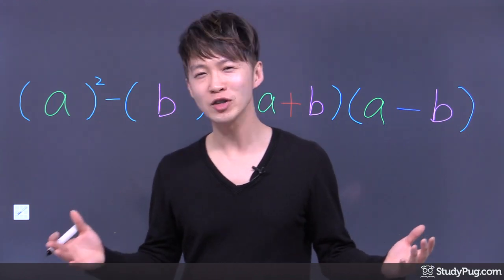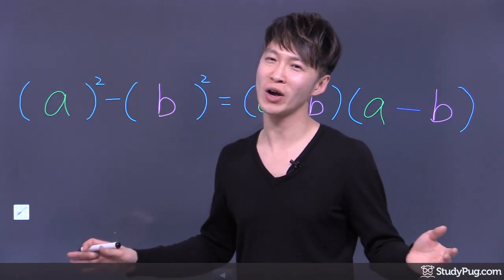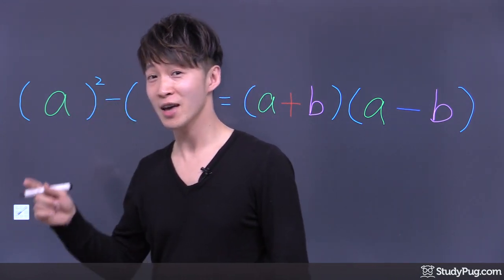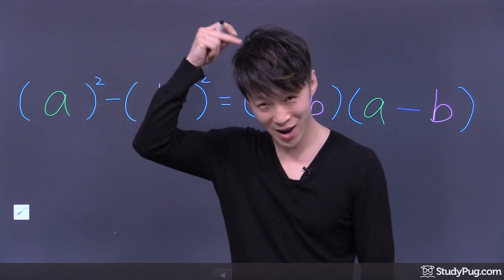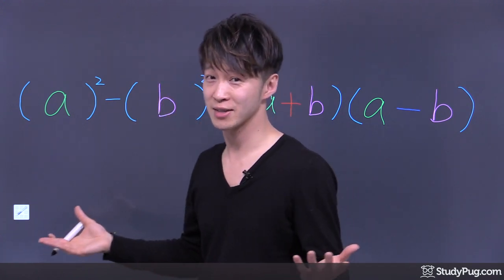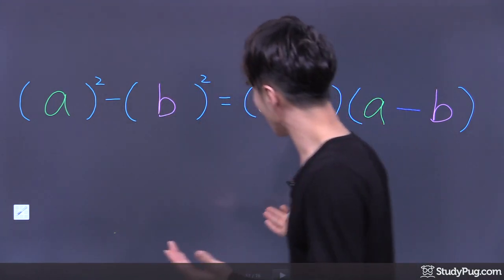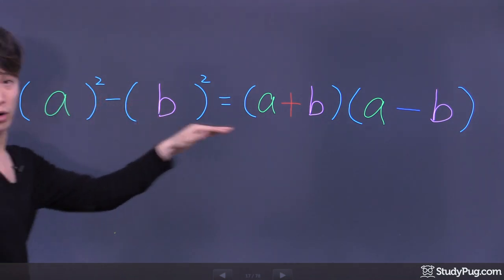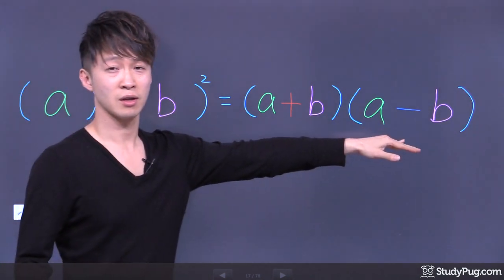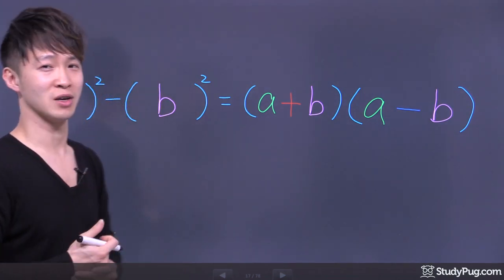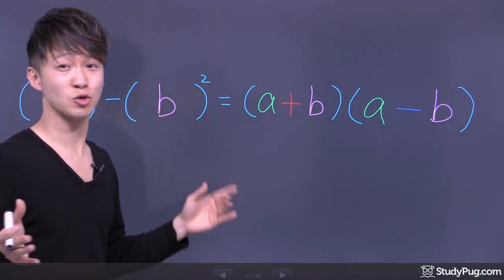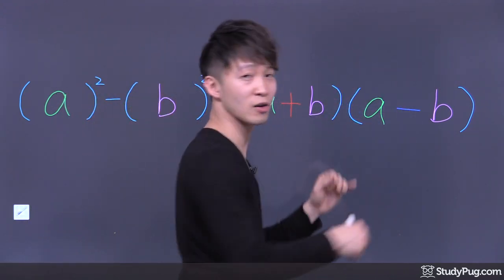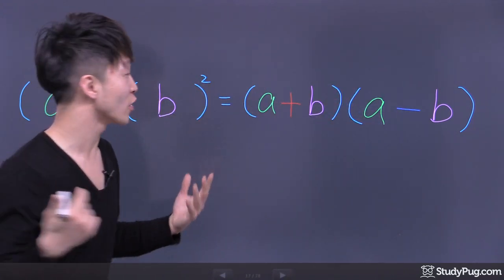I've always told you guys: you should never memorize math — you should try to understand it. And hopefully after you understand it, it sticks, and you don't have to memorize anything. Now we know how the difference of squares formula works, let me prove it. It's actually very easy to prove — all we have to do is multiply everything out by doing FOIL.